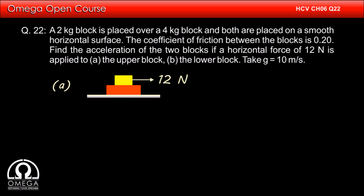Let us apply this approach to this question. In part A, the force is being applied on the upper block. If we take both blocks as a system, the mass of the system is 6 kg and a 12 N force is being applied to it in the horizontal direction. Since the floor is smooth, no other horizontal force acts on the system. Therefore, the common acceleration — the acceleration with which the blocks would move if they move together — is 12 divided by 6, that is 2 m/s².